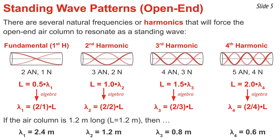If the air column length is 1.2 meters, I can calculate the wavelengths to be 2.4, 1.2, 0.8, and 0.6 meters. Not surprisingly, the wavelength of the second harmonic is one-half that of the first, the wavelength of the third is one-third that of the first, and the wavelength of the fourth harmonic is one-fourth that of the first.